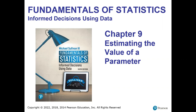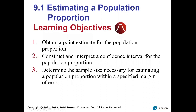Today we are going to work on chapter nine, which is all about estimating the value of a parameter. In this first section, we will work with proportions: obtaining a point estimate for the proportion, constructing and interpreting a confidence interval for the population proportion, and determining the sample size necessary for estimating a population proportion within a specified margin of error.